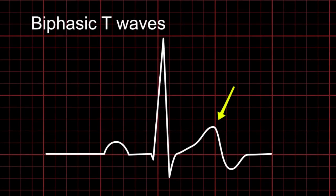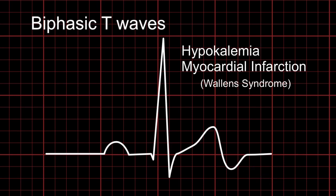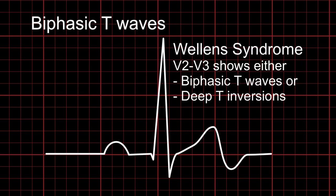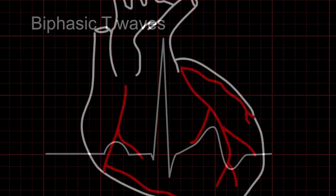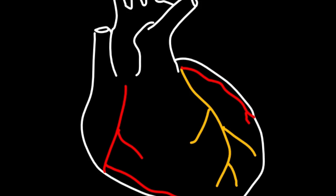Coming to the third abnormality, biphasic T waves. As the name suggests, T waves are going to have a positive and a negative wave. This pattern is commonly seen in hypokalemia, also seen in myocardial infarction. To be precise, in Wellens syndrome, where V2 and V3 will have a biphasic T wave which is specific for critical stenosis of left anterior descending artery.